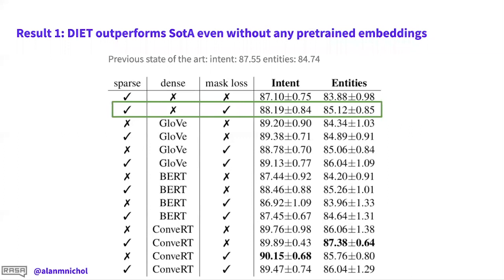That's especially encouraging because Rasa is a very global community — we're not only interested in English or European languages. It's obviously great if you can get really strong performance without saying to everyone: you need to have a massive pre-trained language model.